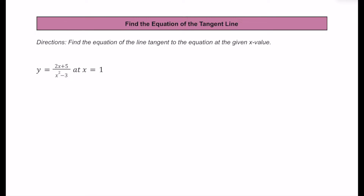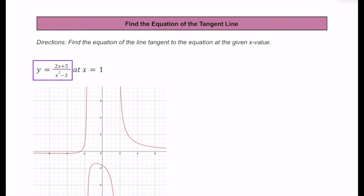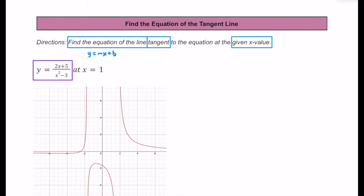Let's practice finding the equation of a tangent line to a given equation at a specific x value together. For the example in this video, we're going to use this rational equation of y equals 2x plus 5 over x squared minus 3. What we're going to do is find the equation of a line in the form y equals mx plus b, tangent to this graph at the given x value of x equals 1.